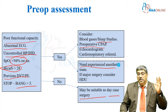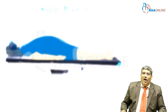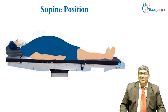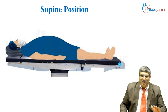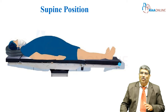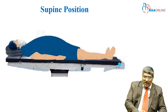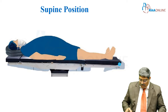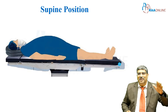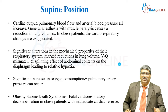The patient should be in a high dependency unit in the post-operative period. Now coming to various positioning in the intraoperative period, particularly with obese patients. First is the supine position — patient lying flat. What are the hemodynamic changes which will happen when the patient is placed in the supine position?